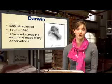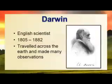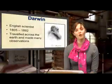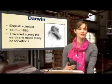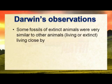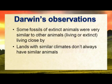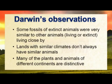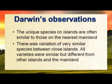So then we come to Darwin. He was an English scientist and he was around from 1805 to 1882. He loved to travel, and he traveled all across the earth and made a lot of observations. He saw fossils of extinct animals that were very similar to other animals living close by. He saw that lands with similar climates don't always have similar animals, and that many plants and animals of different continents are distinctive.